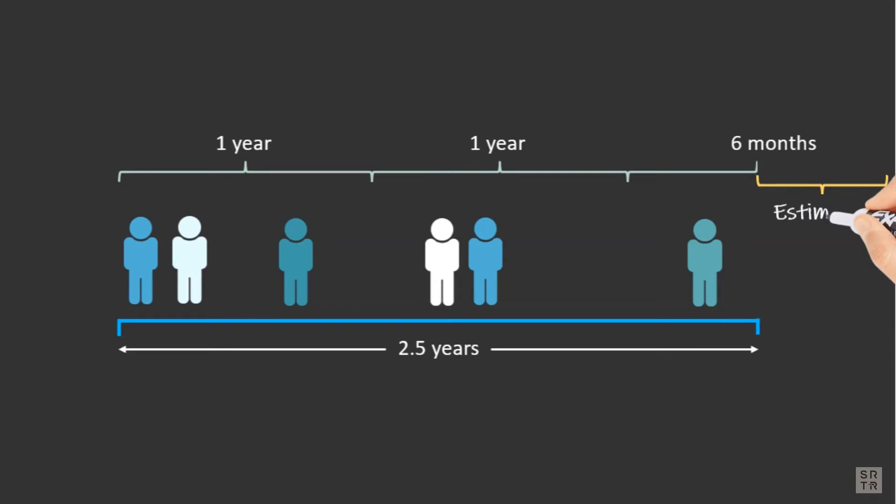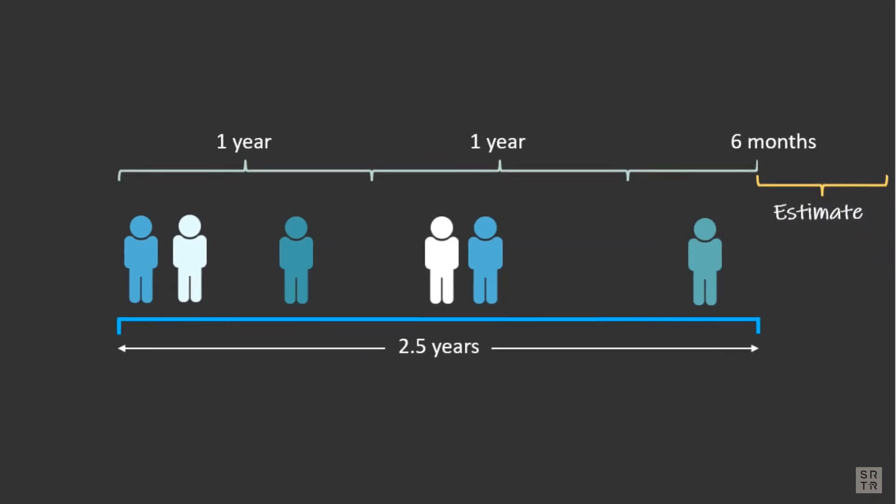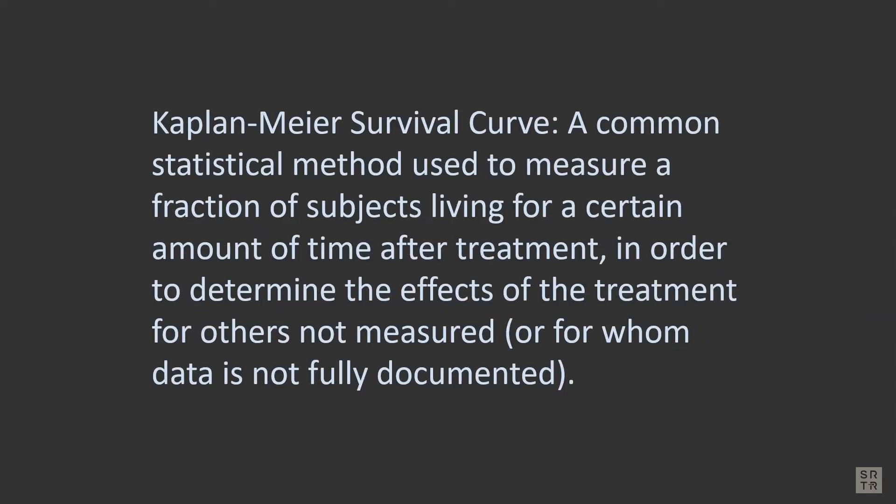Because SRTR is lacking data in the last six months, we need to estimate the probability of survival for the part of the cohort that was censored. This is done by applying a statistical method called the Kaplan-Meier method, which is a valid method for estimating one year survival, even when part of the cohort does not have a full year of follow-up.